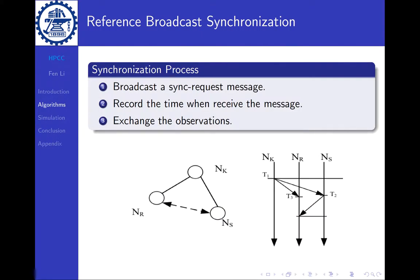Let's first look at the Reference Broadcast Synchronization. RBS is a typical algorithm that uses the receiver-to-receiver model. It takes three steps to synchronize the nodes NS and NR using the given beacon node NK. First, NK broadcasts a synchronization request message to other nodes.